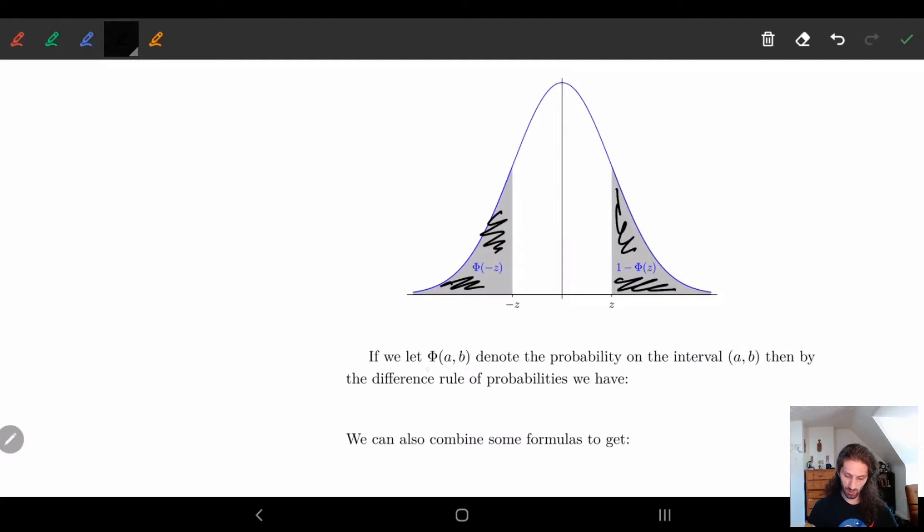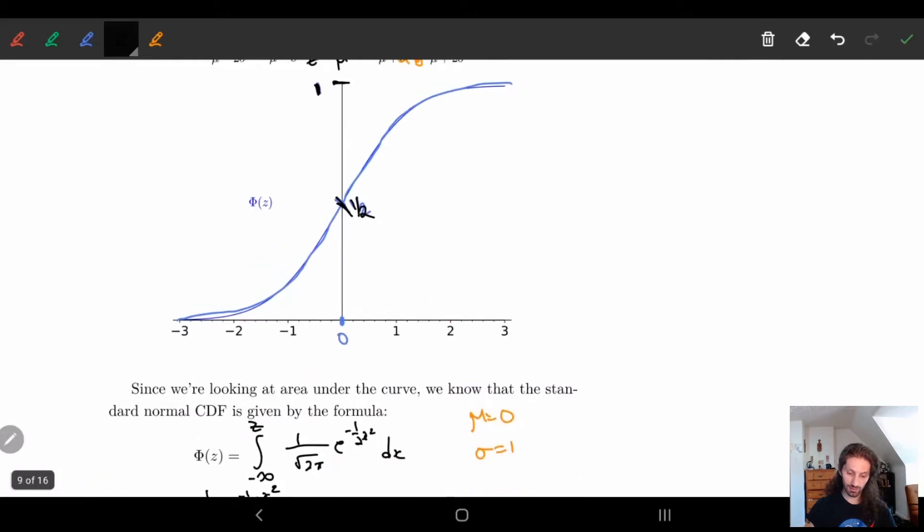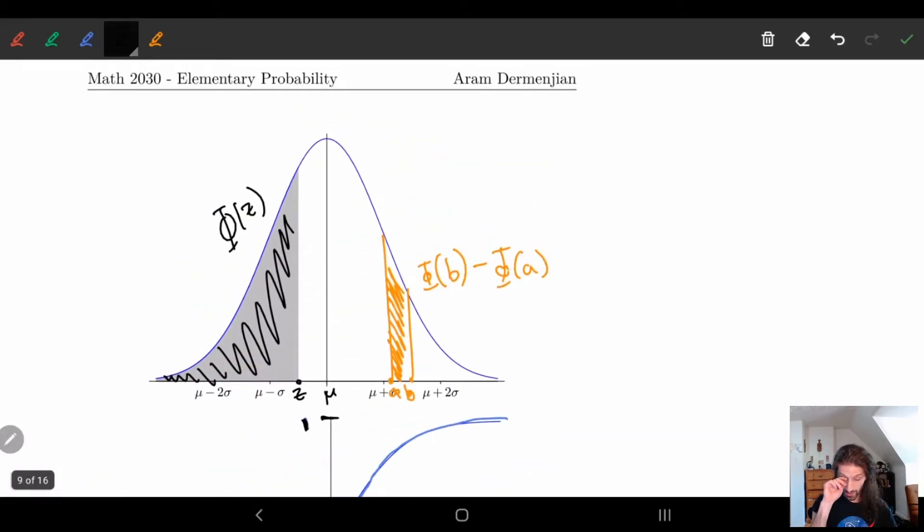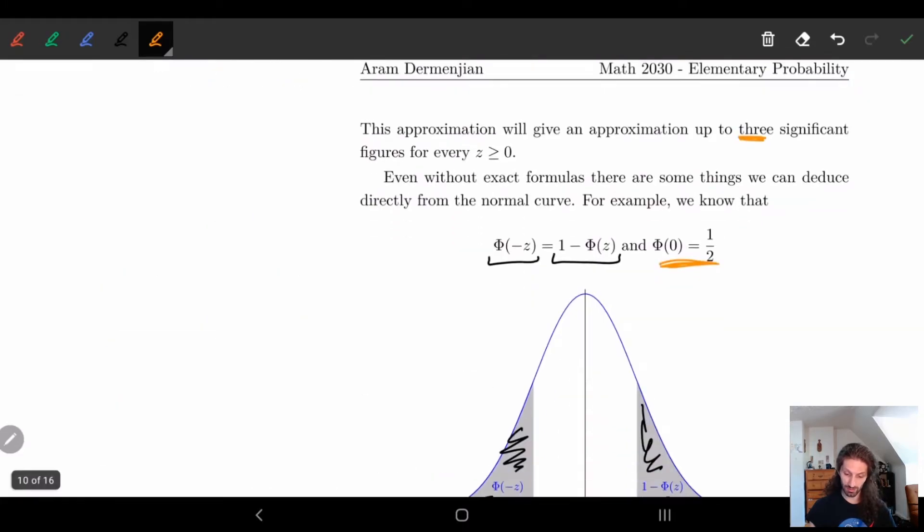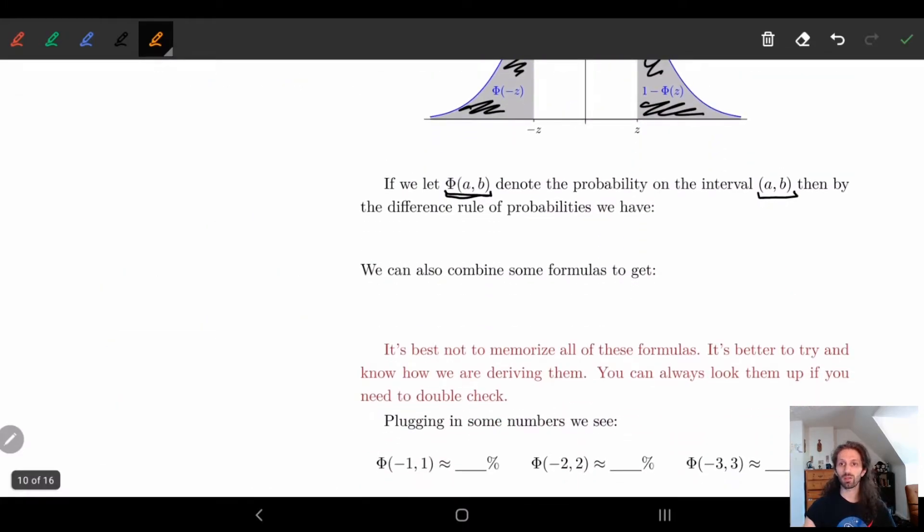Okay, so remember Φ(a,b). We're going to let this be the probability on the interval (a,b). In other words, when we're looking at our little thing, we're asking the probability of landing in this region here—what's the probability that we end up here? So that is what Φ(a,b) is. So this we already kind of saw, right? The difference rule basically says here we have Φ(a,b) is equal to Φ(b) minus Φ(a).